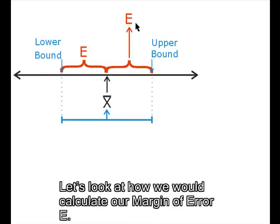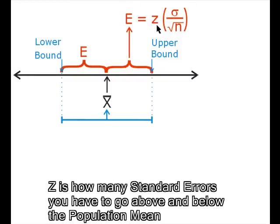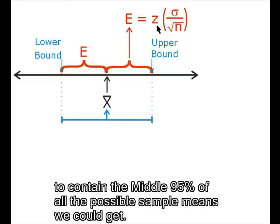Let's look at how we would calculate our margin of error E. Z is how many standard errors you have to go above and below the population mean to contain the middle 95% of all the possible sample means we could get.